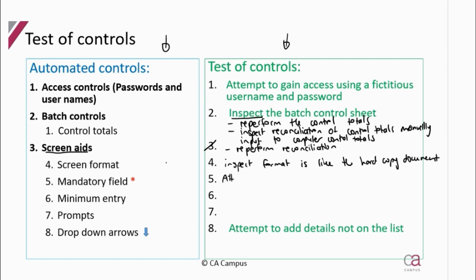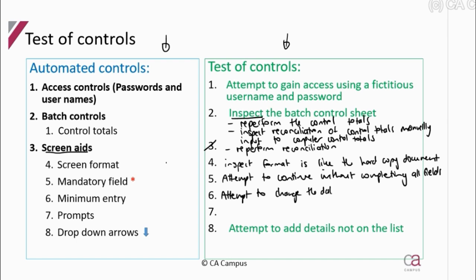For mandatory fields, you must complete those fields before you can move on — attempt to continue without completing all the required fields and you should not be allowed. For minimum entry, information is pulled directly from the master file, so attempt to change the data that has been pulled from the master file or attempt to stop the data from being pulled — you should not be allowed to do either.